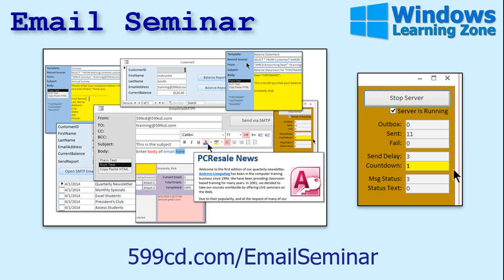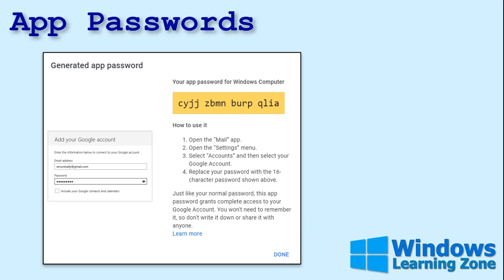While you can no longer log into Gmail using your account username and password, you can still log on using a custom-generated app password that's unique to your app. So you don't use your Google login — you use a custom app password instead. Let me show you how to set this up.